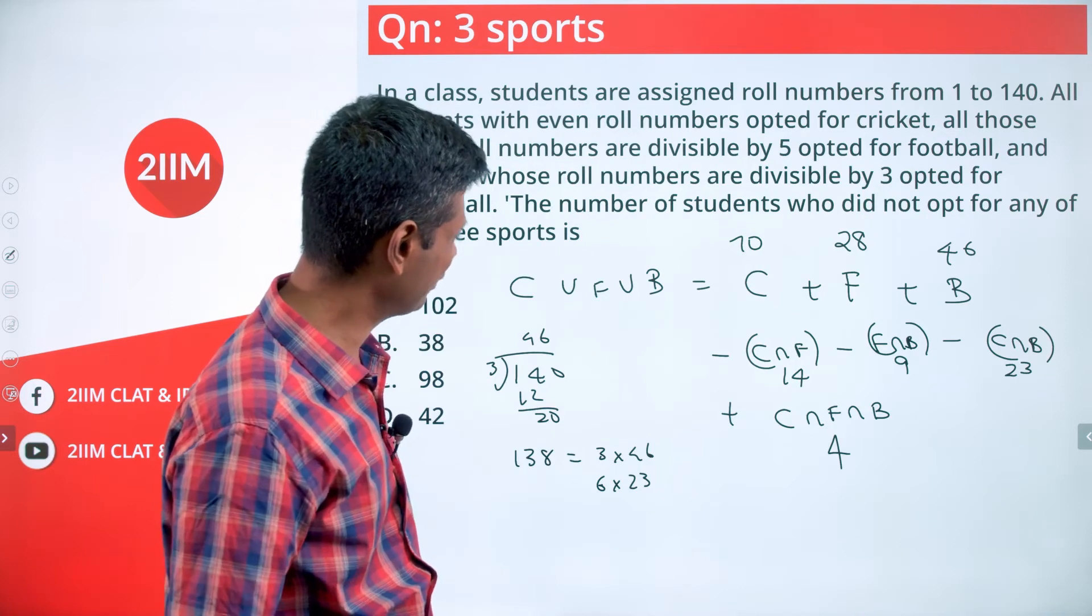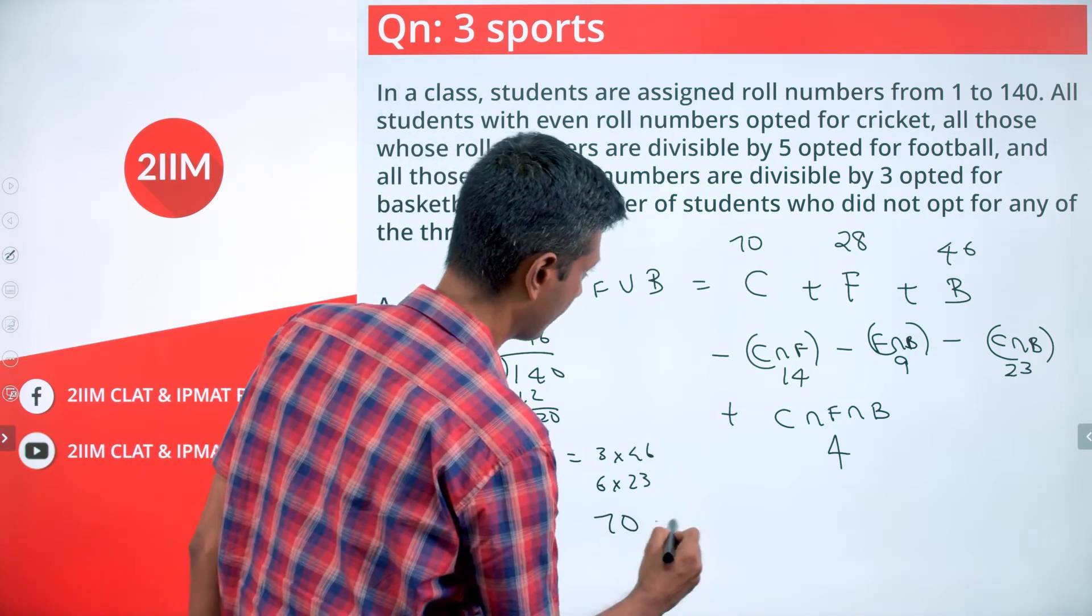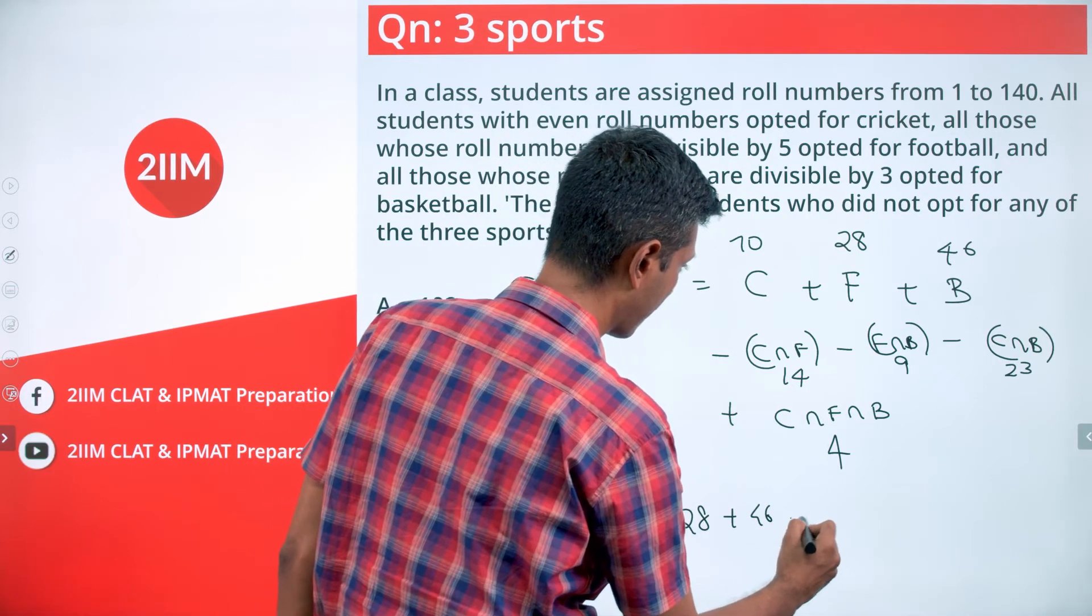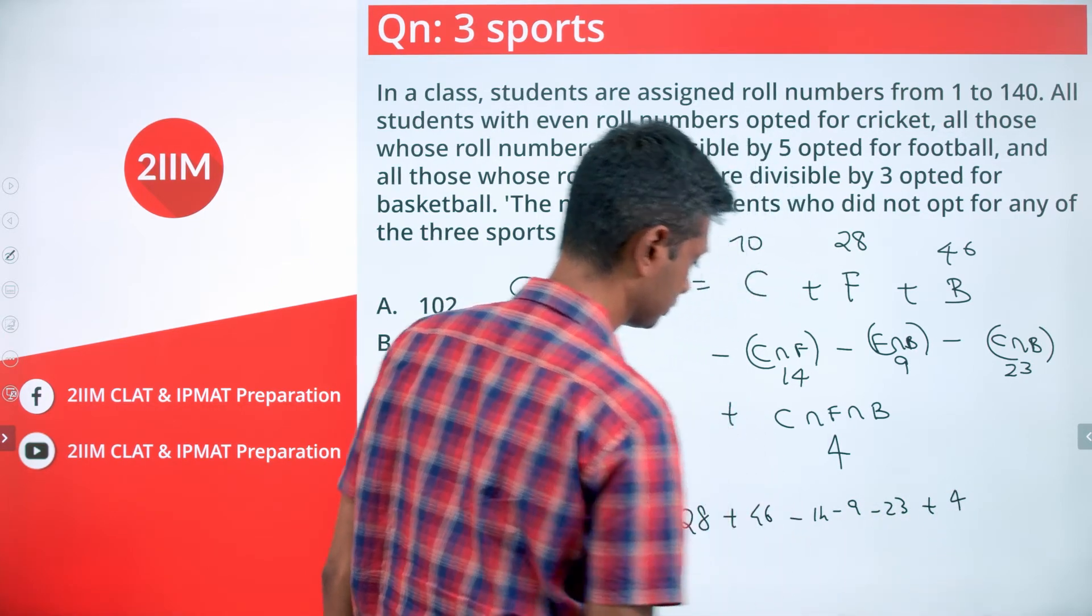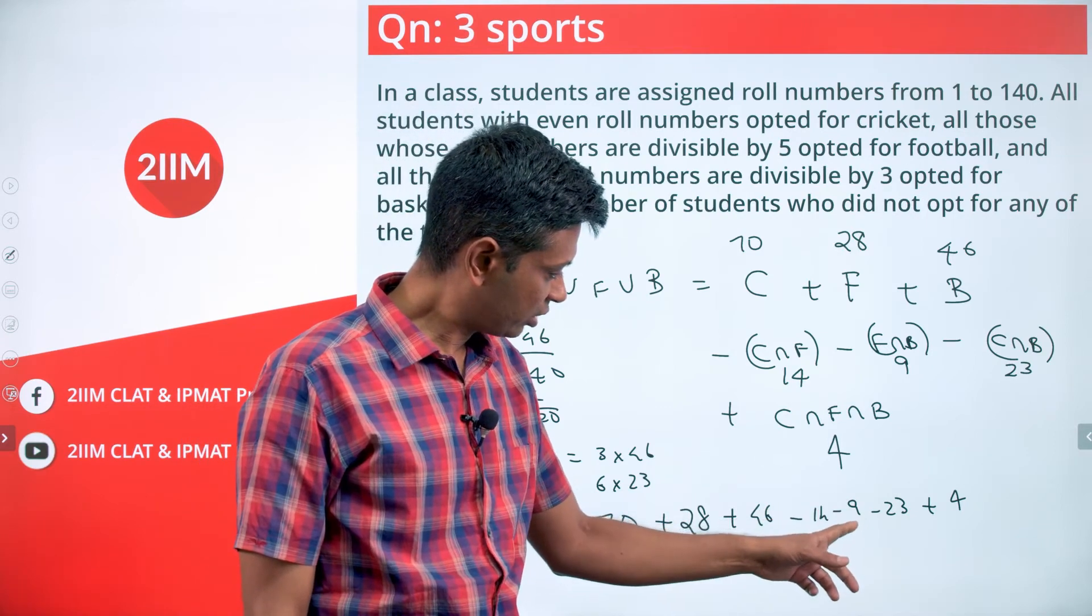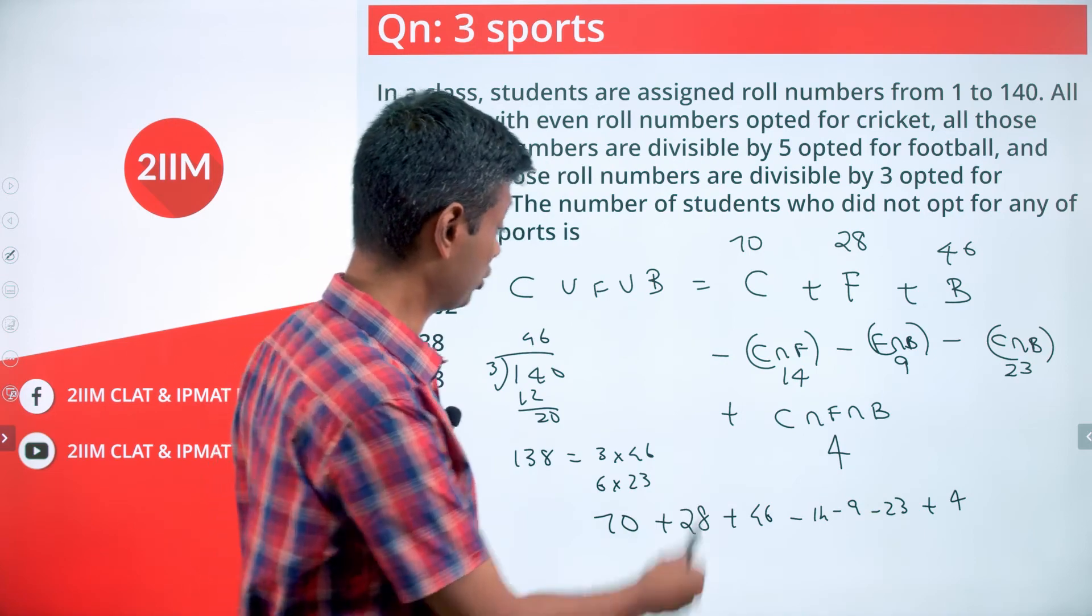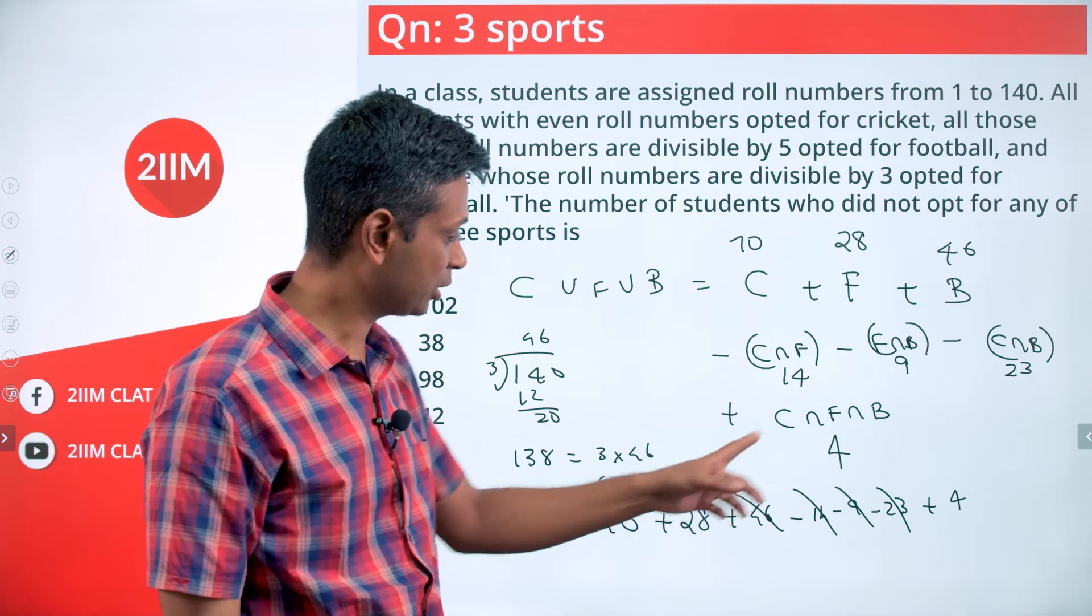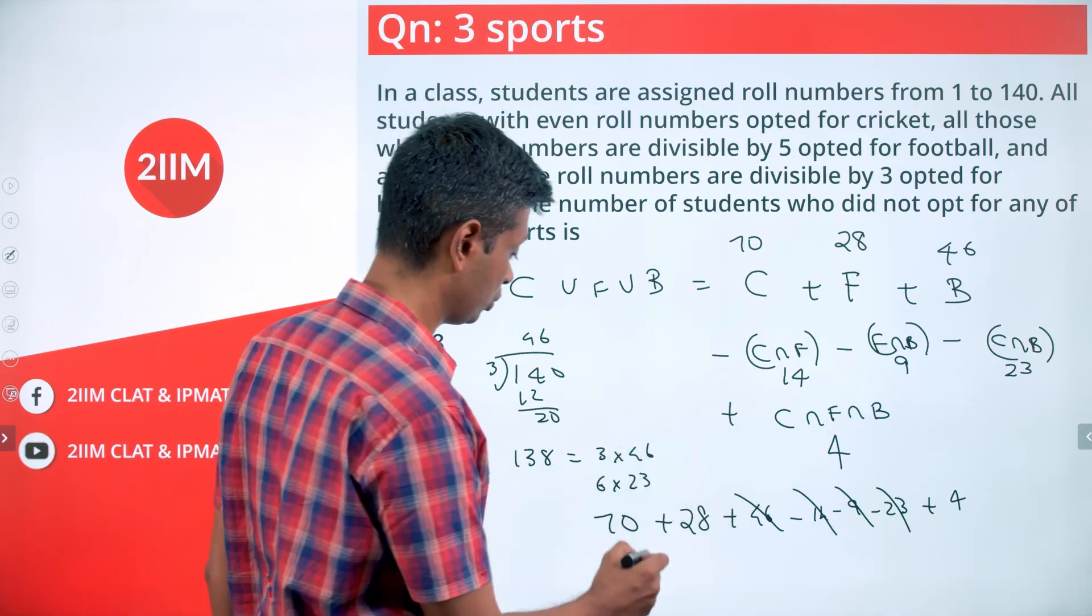So we calculate: 70 + 28 + 46 - 14 - 9 - 23 + 4. Simplifying the terms that cancel, this becomes 70 + 28 + 4 = 98 + 4 = 102.